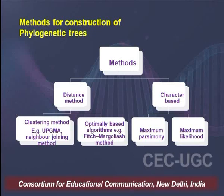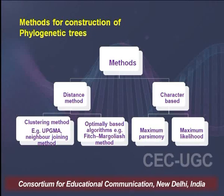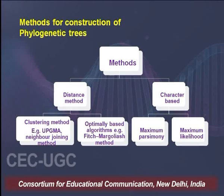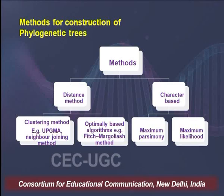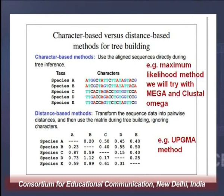The methods for building a phylogenetic tree can be classified into two types: distance methods and character methods. In distance methods — either clustering or optimality-based — we calculate the phylogenetic distance based on multiple sequence alignment. In character-based methods, we have maximum parsimony and maximum likelihood. In the character-based method, aligned sequences are used directly during tree inference, taking every character into consideration. We will be using MEGA and Clustal Omega to study these methods.